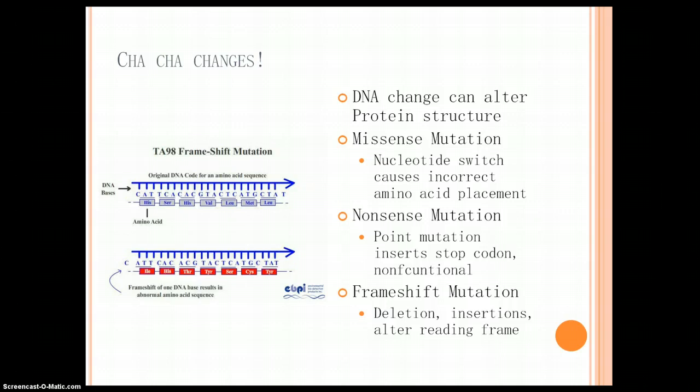Now, when a frameshift happens, the reading frame is messed up. So, instead of being part of this sequence, the C is part of, like, a promoter region, or it's part of an intron, or something bad happens to it, so it gets removed. Well, now, the reading frame is all off by one letter. So, what was histidine now becomes isoleucine, serine becomes histidine, histidine becomes threonine, valine becomes tyrosine, leucine becomes serine, methionine becomes cysteine, and leucine becomes tyrosine. So, you basically, by changing the reading frame with one point shift, by removing that C, you've created an entire new protein structure.